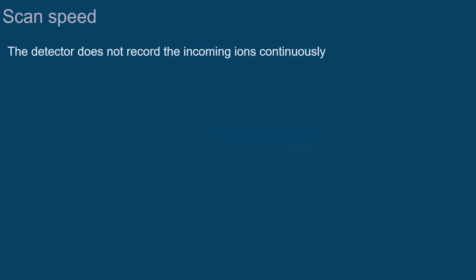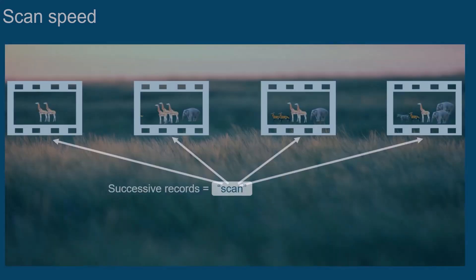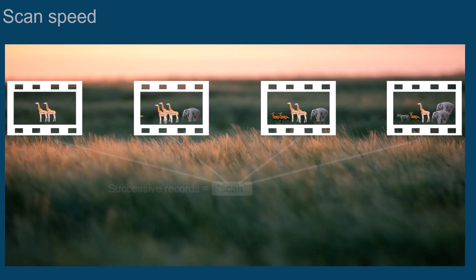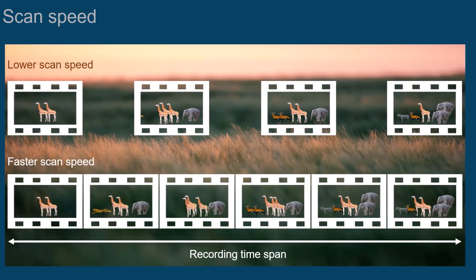The detector does not record the incoming ions continuously. Rather, it makes successive recordings called a scan. You can compare this to captured images, like in a movie. The scan speed determines how many scans are recorded in a given time span.